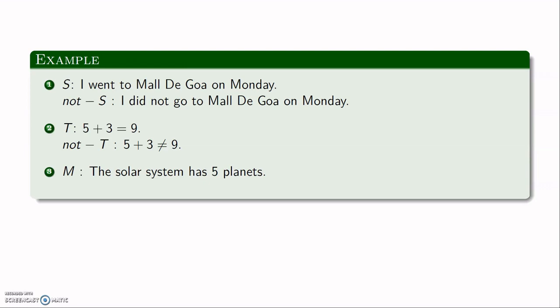One more example: The solar system has 5 planets. This is a false statement and its negation would be: The solar system does not have 5 planets. So given any statement, I can find its negation. If the given statement is true then the negation will be false, and if the given statement is false then the negation will be true.